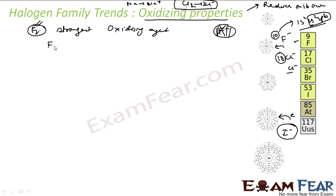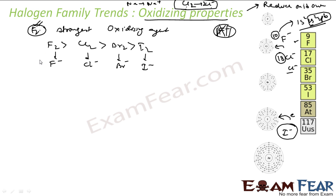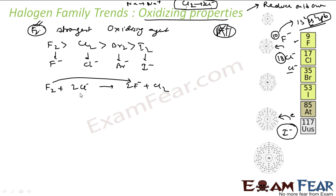Fluorine gas is the strongest oxidizing agent and can even oxidize other halide ions. For example: F₂ + 2Cl⁻ → 2F⁻ + Cl₂. Fluorine can also oxidize bromide and iodide similarly. The order of oxidizing agents is: F₂ > Cl₂ > Br₂ > I₂, because these gases have the tendency to become F⁻, Cl⁻, Br⁻, and I⁻ respectively — that is, they reduce themselves and oxidize something else.